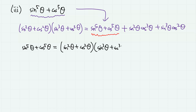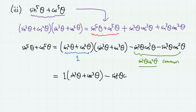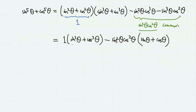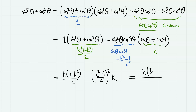Therefore, sine to the 5 theta plus cosine to the 5 theta equals sine square theta plus cosine square theta, times sine cube theta plus cosine cube theta, minus sine square theta cosine square theta times (sine theta plus cosine theta). Since sine square theta plus cosine square theta is 1, this becomes sine cube theta plus cosine cube theta minus sine square theta cosine square theta times k. We have already obtained sine cube theta plus cosine cube theta equals k(3 minus k square) over 2, and sine theta cosine theta equals (k square minus 1) over 2. Therefore we have k(3 minus k square) over 2, minus ((k square minus 1) over 2) squared times k, which simplifies to k times (5 minus k to the power of 4) over 4. This is our answer.